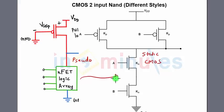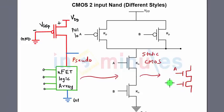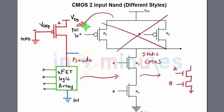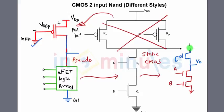We know the pull-down network remains the same, so let's quickly draw the pull-down for a pseudo-NMOS two-input NAND. This is input A — it's an NMOS transistor — in series with input B, with the bottom grounded. The pull-up will not be like static CMOS; it will be replaced by a single PMOS transistor with its gate grounded.